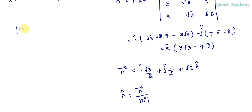So for magnitude of n vector, what we have to do is take the coefficients, square them, and add them all, then take the square root. So square root of root 3 by 2 square plus 1 by 2 square plus root 3 square.